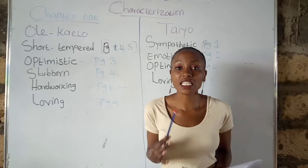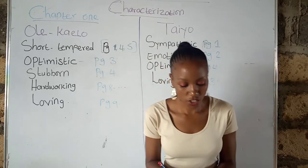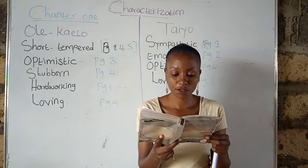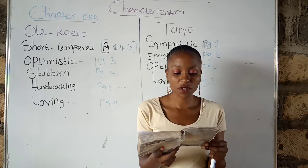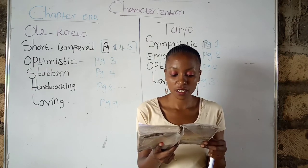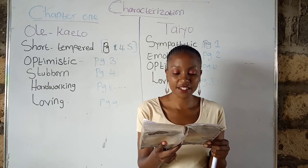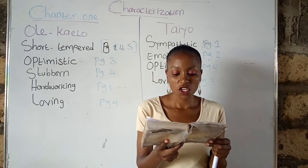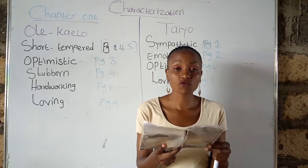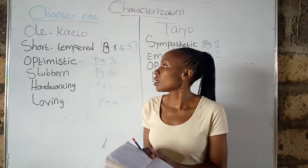Number three: he is stubborn. We also learn this from Tayo, who describes Ole Kyalo as being stubborn in nature. That is on page four, last paragraph: 'I can't promise that with certainty,' he said. 'You know the stubborn nature of father.'